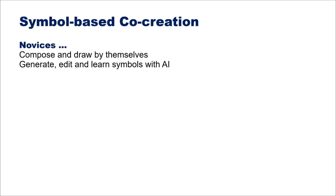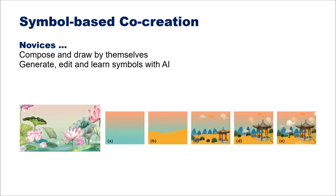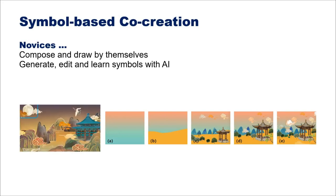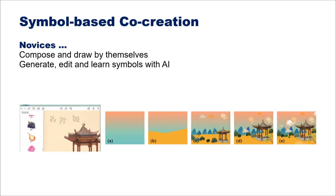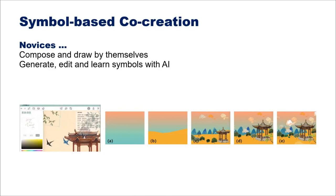In our symbol-based co-creation process, novices are free to compose and draw by themselves, and they can also generate, edit, and learn symbols with AI, as shown in the video below. More specifically, in steps A and B, users compose the painting by themselves. In steps C and D, they draw symbols with AI. Finally, in step E, they do some supplemental drawings.